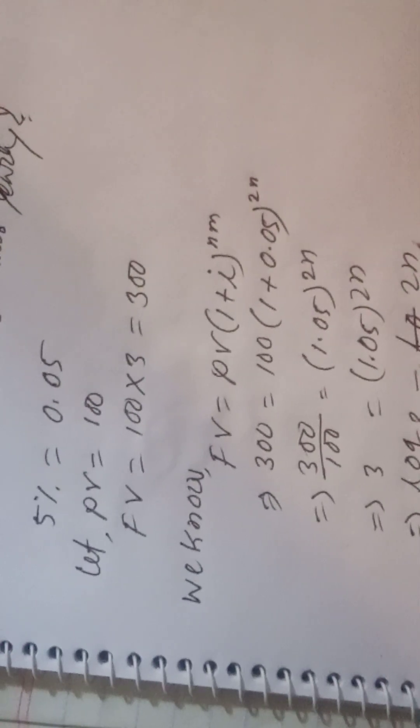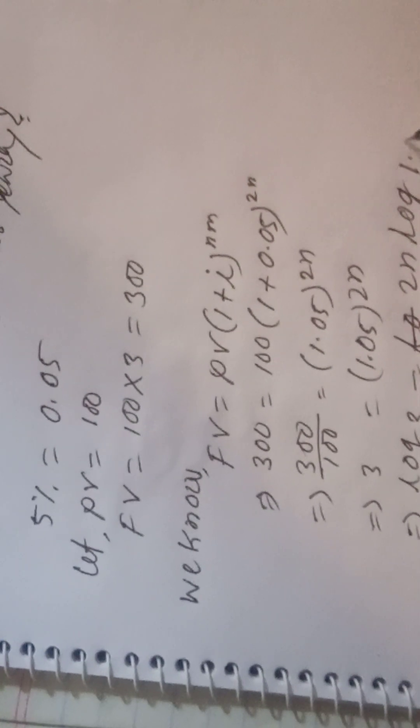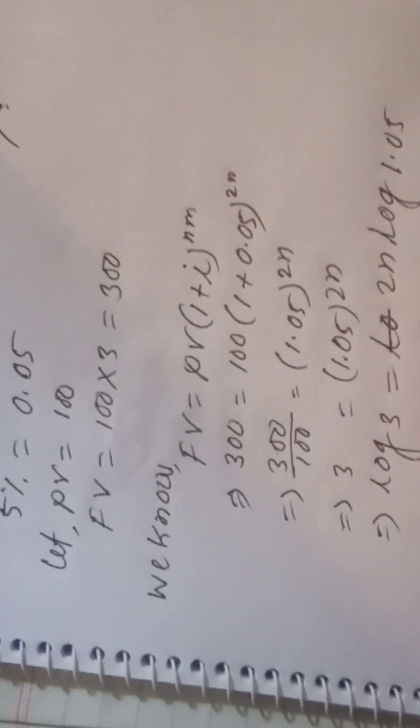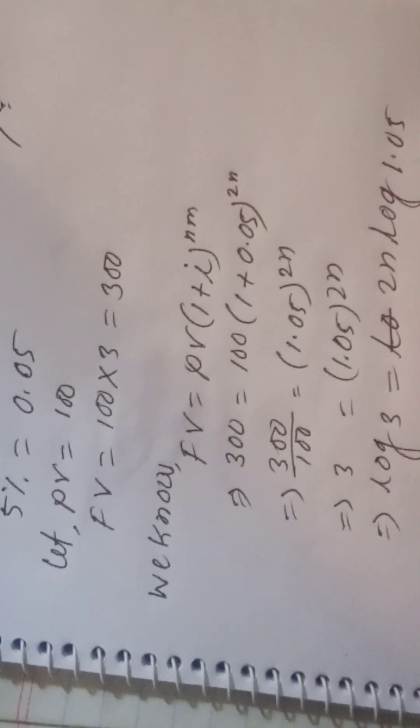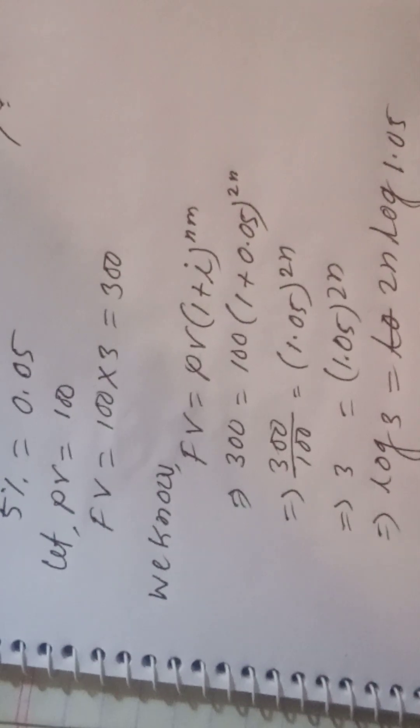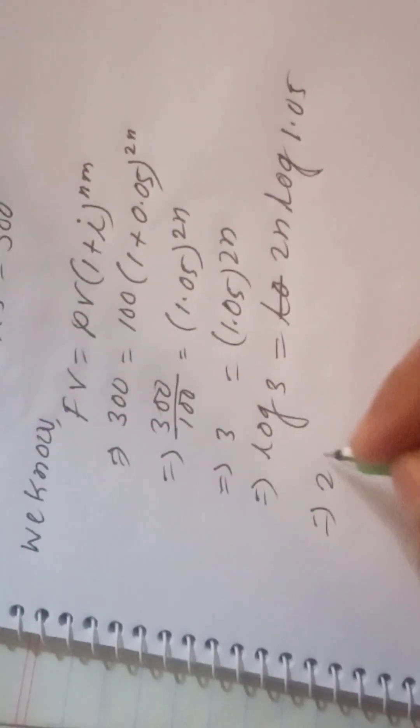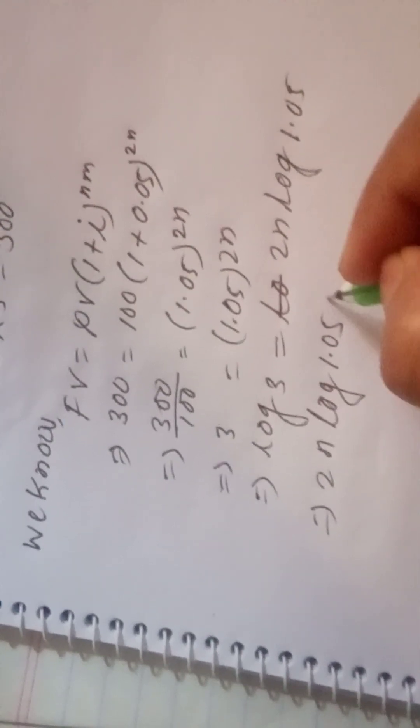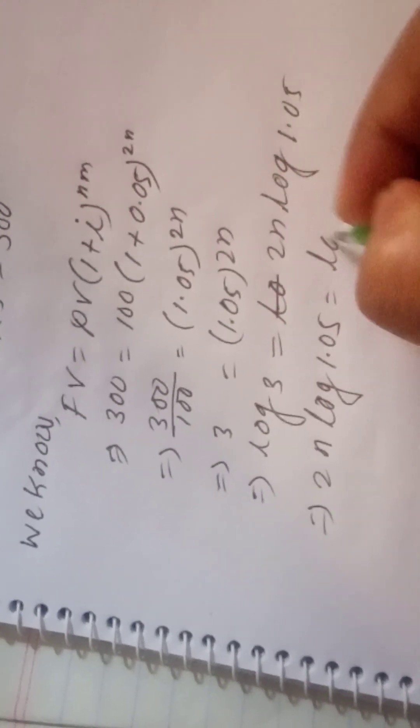So 2n log 1.05. By altering, 2n log 1.05 equals log 3.